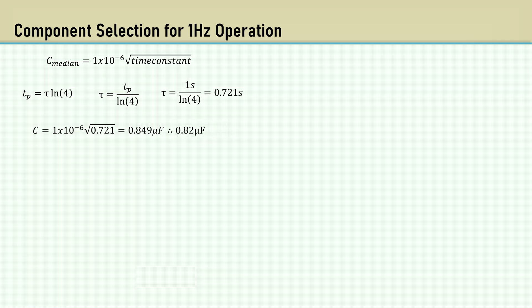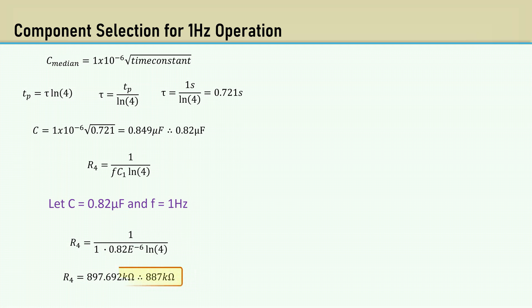The closest E24 value is 0.82 microfarads. We can use our equation for R4 and let C equal 0.82 microfarad and the frequency be 1 hertz. Plugging those in gives us 897 kilohms, and the closest E96 value is 887 kilohms.